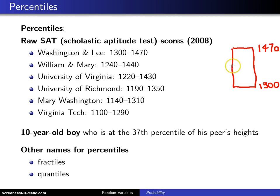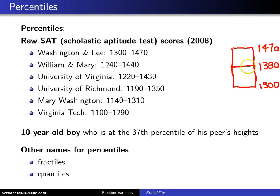Somewhere in between these two numbers — and I don't know exactly where this is for Washington and Lee, I'll just make up a number, maybe 1380 — is what's known as the 50th percentile, or the sample median. It's the point where you have half of the distribution above and half below.